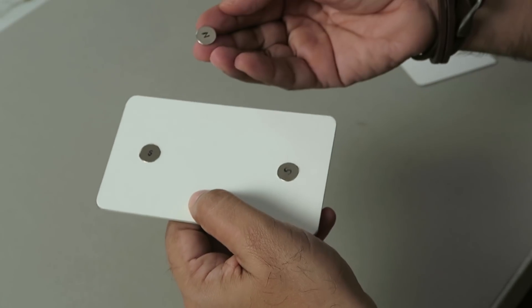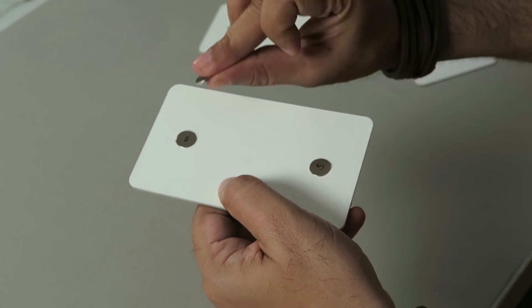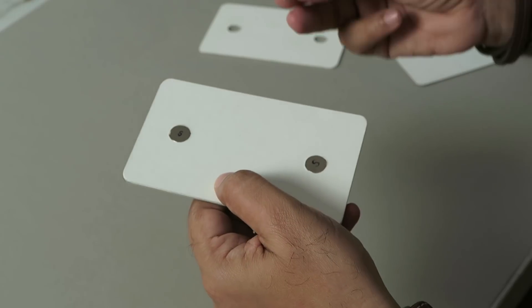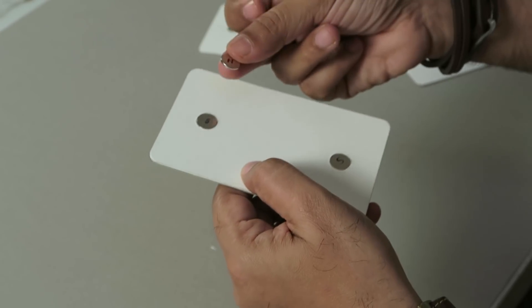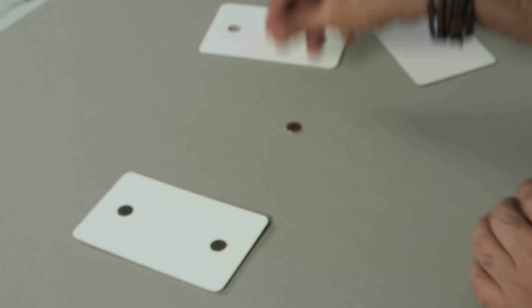Now for the other one, I'll keep the north on top so that it sticks to the other magnet. If I keep the same poles, then it will repel and not stick. So let's get the other one ready.